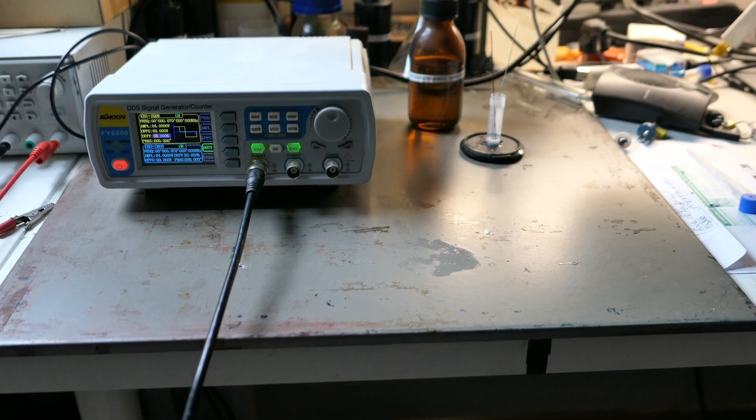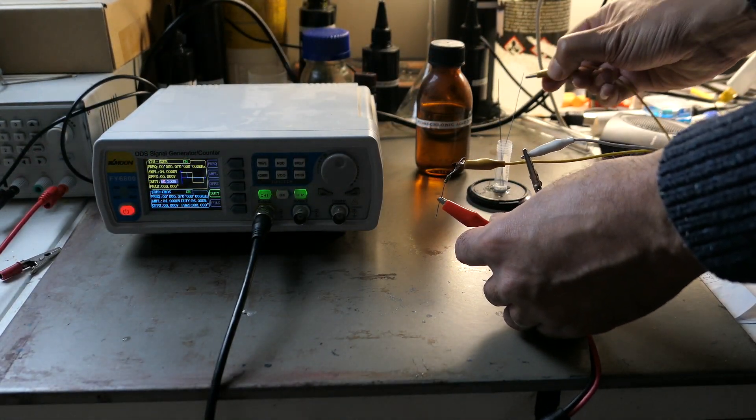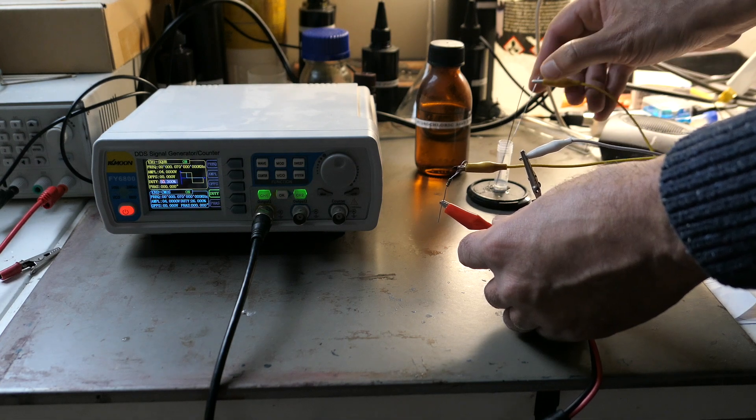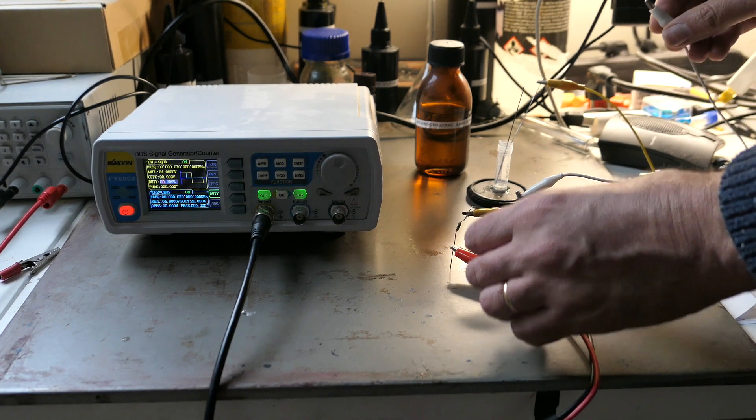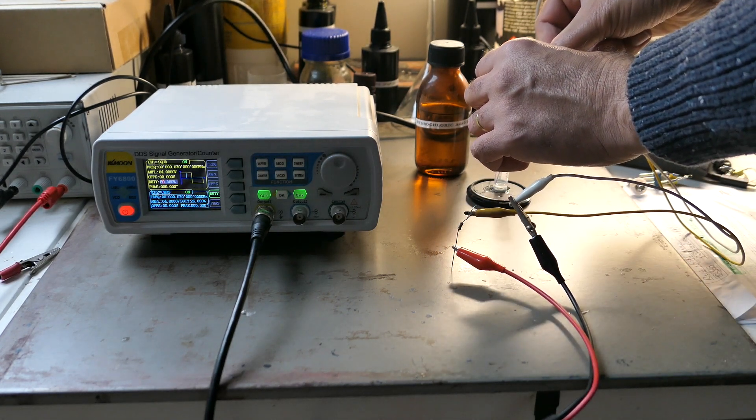I've set the frequency to 100 hertz for now, but based on what I've read in some articles it might be better to use a lower frequency like 10 hertz for better efficiency. For the amplitude I've initially set it to 2 volts but I'll increase it later once I see the voltage drop across the solution.